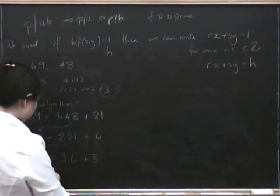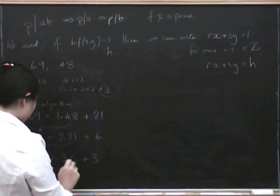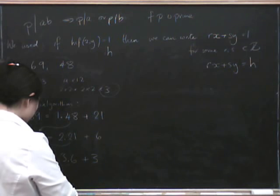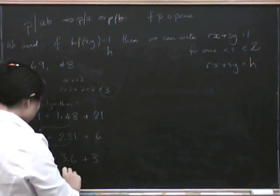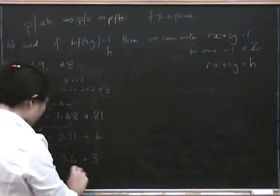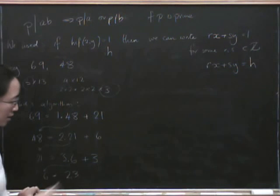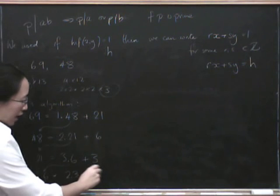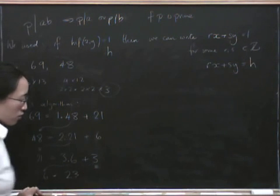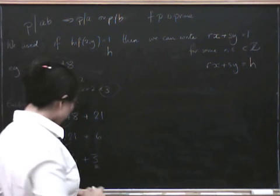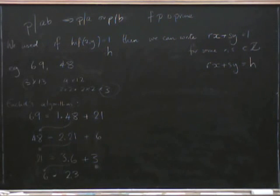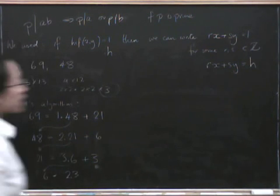Finally, we take 6 and see that 6 is 2 times 3 with no remainder. And that means that our last remainder, 3, was the highest common factor. So indeed the highest common factor is 3.